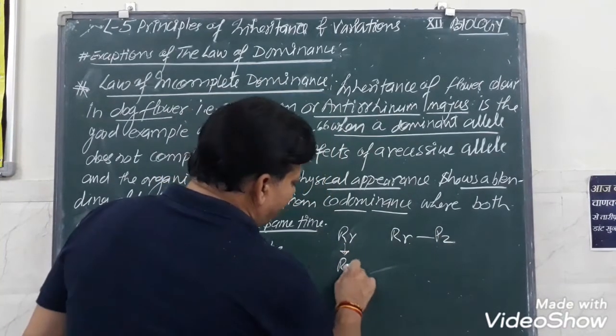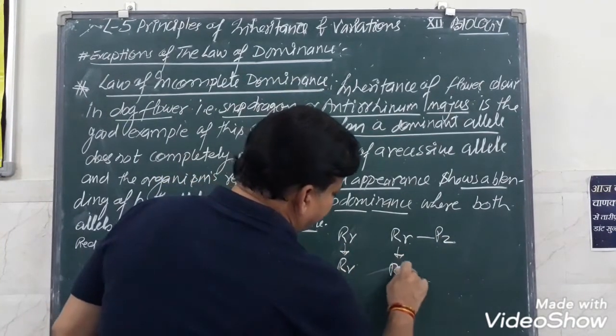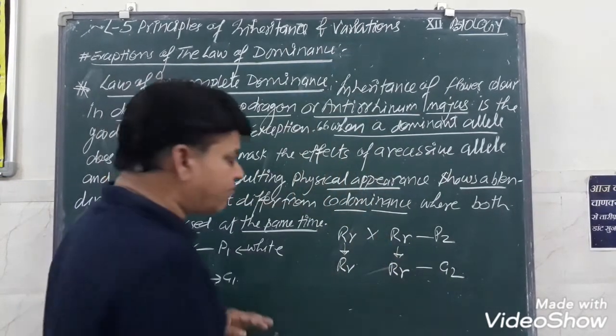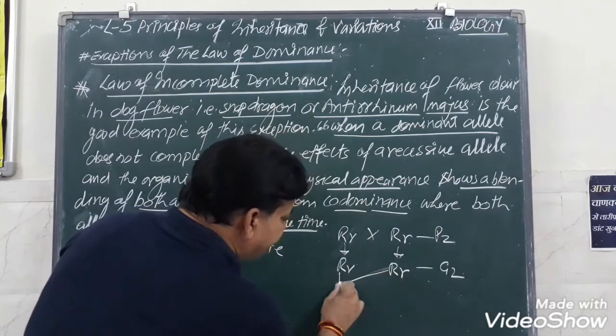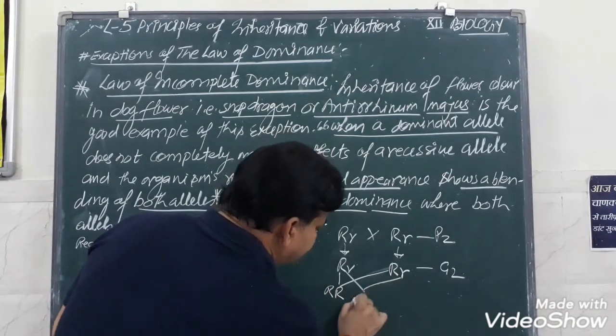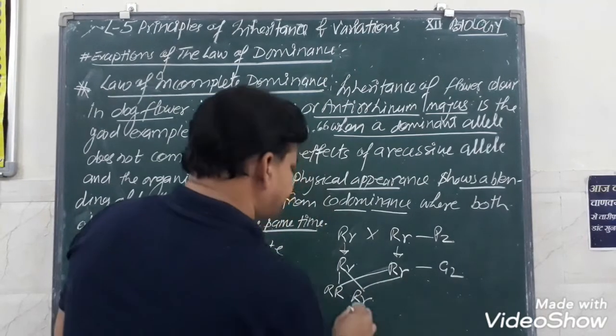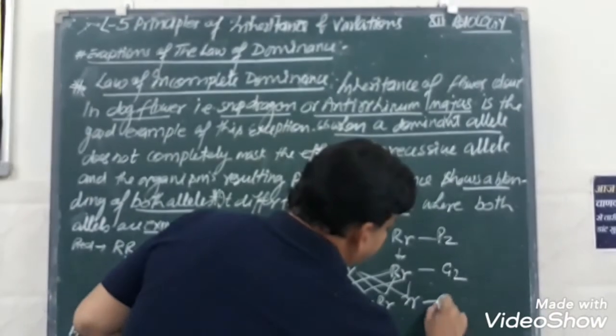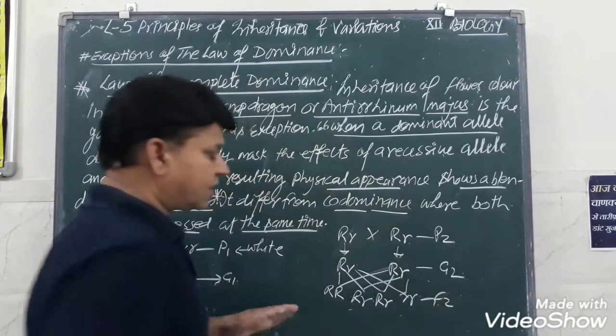Gametes are formed in the form of R and r, these are the G2. And if selfing is done between both, we find that RR, that is capital R capital R, capital R small r, small r capital R, small r small r. This is the F2 generation.